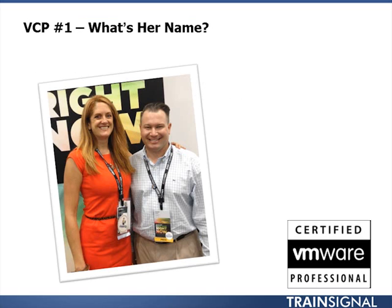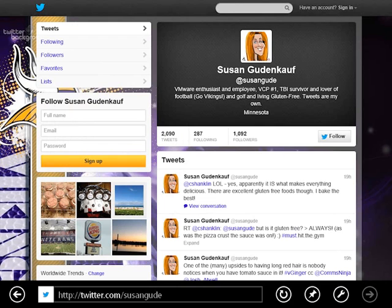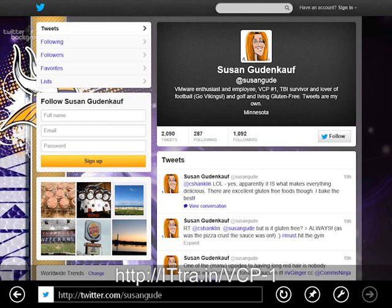If you want to become a VMware Certified Professional, perhaps you should know who was the very first VCP ever — VCP number one. That question won't be on the exam; the exam will ask you about VMware vSphere, vCenter, and ESXi. But you should know who came before you. That person is pictured with me here. She's super nice, she works for VMware, and I was honored to have my picture taken with her at VMworld 2012. Her name is Susan Gudenkoff. You can follow her on Twitter. TrainSignal also did a video interview with her posted on our blog, covering her story of becoming the first VMware Certified Professional.